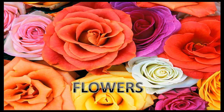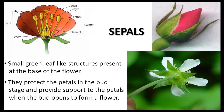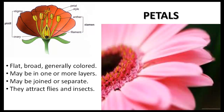Flowers are the reproductive part of the plant. They generally have four sets of parts arranged in rings or whorls. The outermost whorl is called the sepals. Sepals are small green leaf-like structures present at the base of the flower. They protect the petals in the bud stage and provide support when the bud opens to form a flower. The inner whorl consists of the petals, which are flat, broad and generally coloured. They may be in one or more layers, joined or separate, and they attract flies and insects.